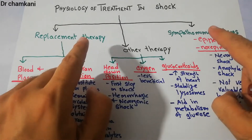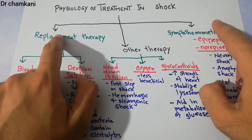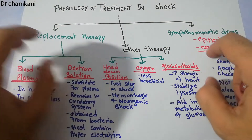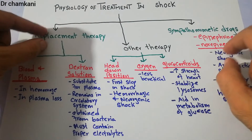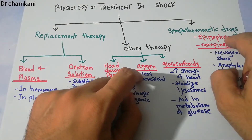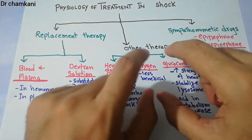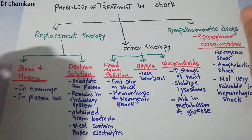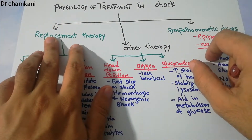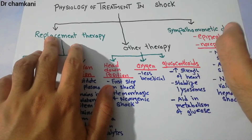The treatment options include the replacement therapy, the sympathomimetic drugs, and other therapies. In the replacement therapy, we simply replace the thing which is lost.